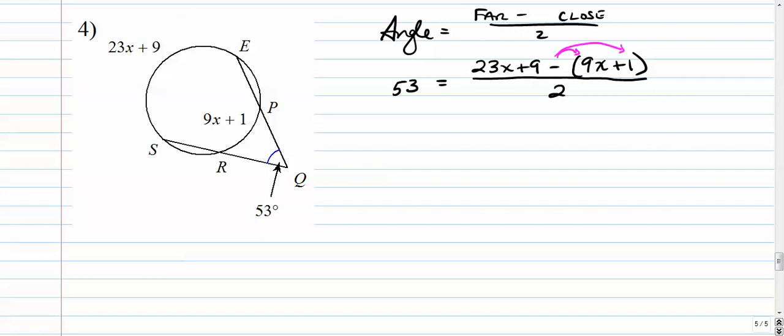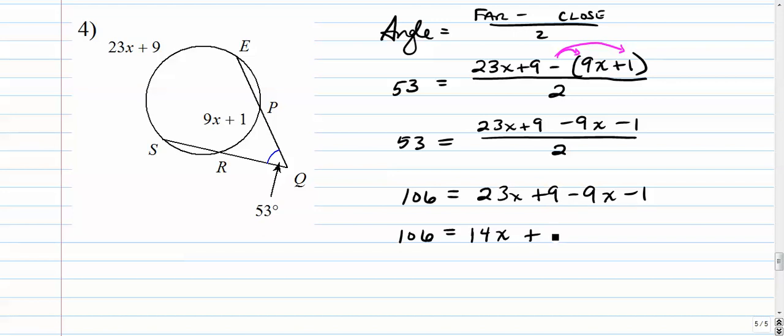So, here we're going to distribute that minus sign after it. So, I'm going to get 53 equals 23x plus 9 minus 9x minus 1. That gets rid of the parentheses there. Multiply both sides by 2. We get 106. 106 is equal to... The numerator doesn't change. Let's combine like terms on the right. 23x minus 9x is 14x. Positive 9 minus 1 is positive 8.